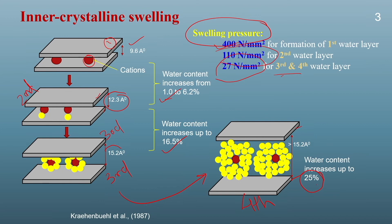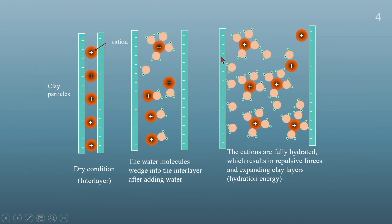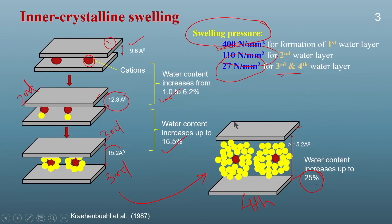In inner crystalline swelling, a lesser amount of swelling takes place compared to osmotic swelling, and depending on the type of cations the amount of swelling differs. The clay plates in inner crystalline swelling have exchangeable cations between them in the dry stage. After the fourth layer the cations are fully hydrated, resulting in repulsive forces that expand the clay plates and cause swelling of the soil. Since inner crystalline swelling has very high swelling pressure, it is generally ignored for engineering applications.